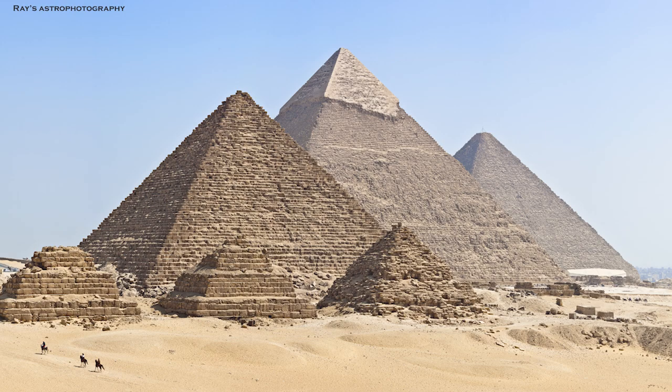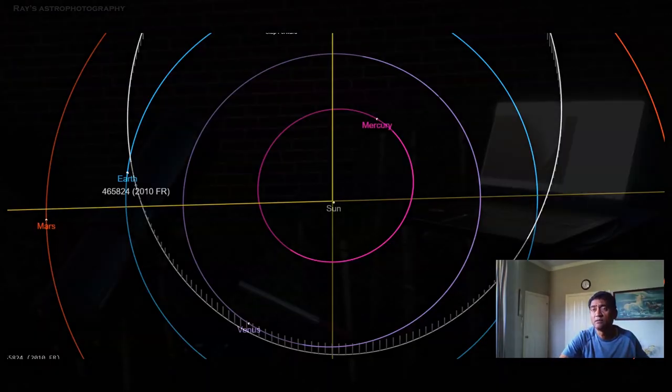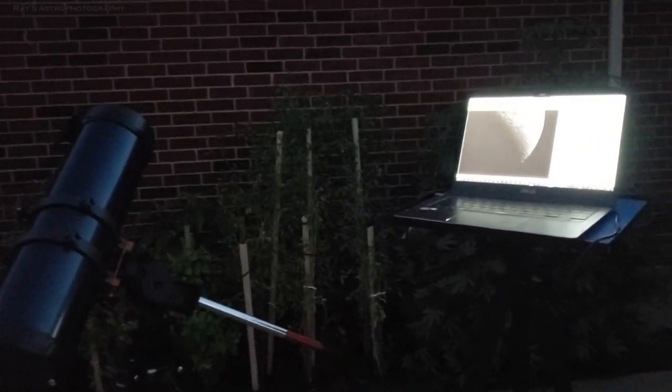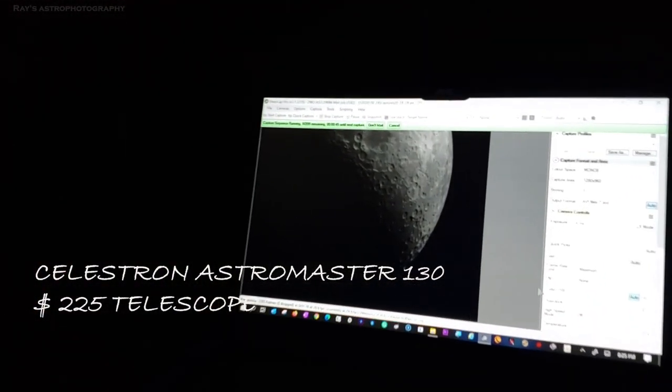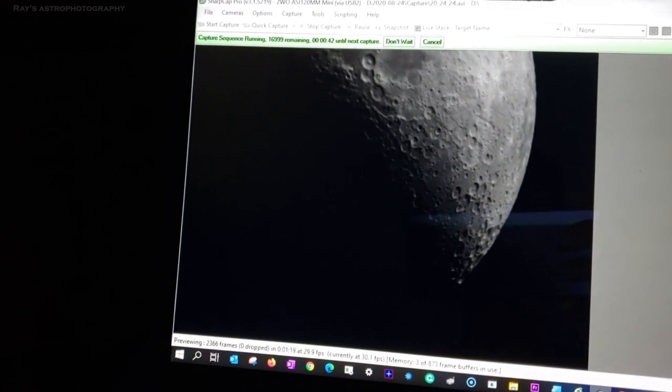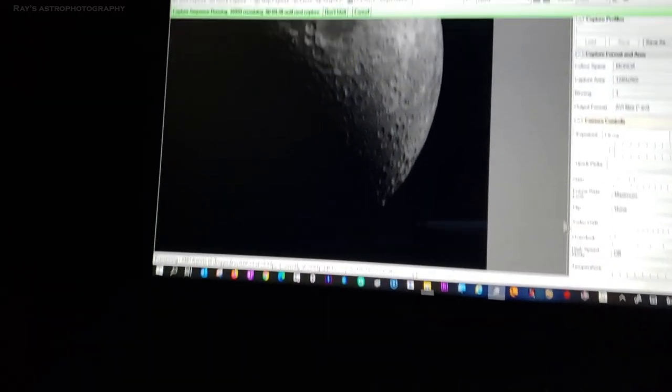I am using the Celestron Astro Master 130 to take pictures of the Moon and the planets. It captures beautiful details.